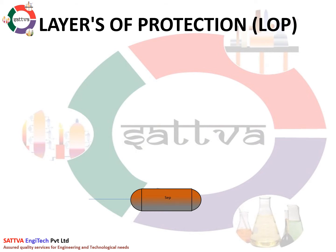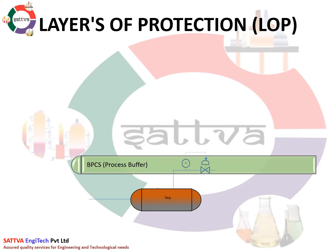The first layer of protection is the basic process control system, i.e. a process buffer available in design, wherein system volume or buffer takes control and keeps the change or offset within control. Typically, it is done via a control system such as DCS.